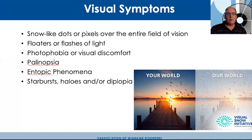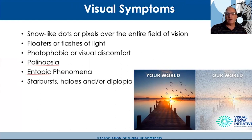Other visual symptoms include entoptic phenomena, starbursts, halos, and diplopia. There's a graphic shared by the Visual Snow Initiative that shows a typical view compared to what a person with visual snow sees — it's really something cool to take a look at.